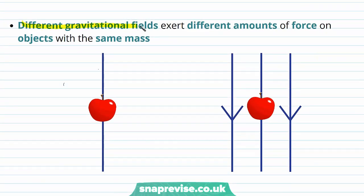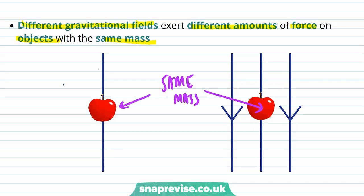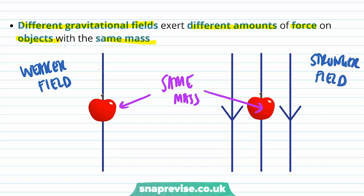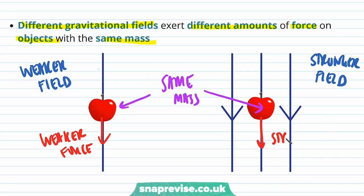Different gravitational fields exert different amounts of force on objects with the same mass. So now we have two apples of the same mass — one is in a weak gravitational field and the other is in a stronger gravitational field. The apple in the weaker field is going to experience a weaker force, and the apple in the stronger field will experience a stronger force.